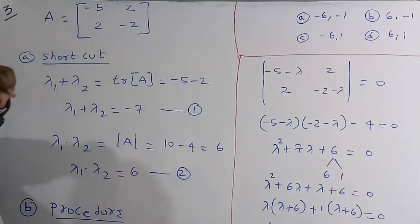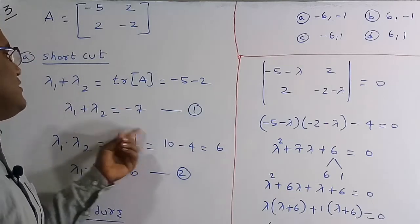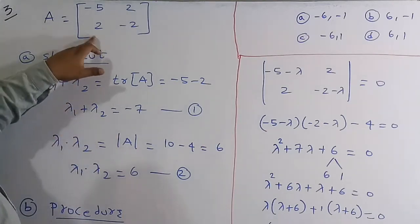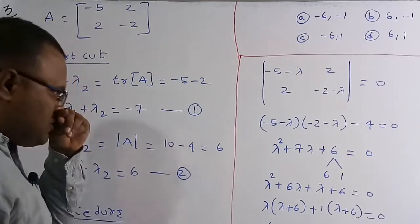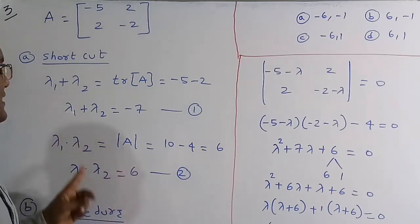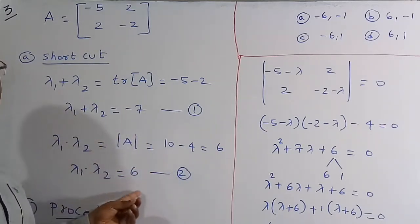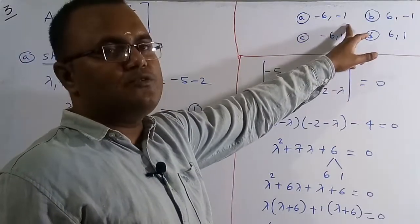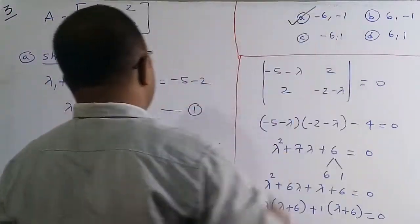Checking the options: −6 and −1 give sum = −7 and product = 6, satisfying both properties. This confirms option C is correct.